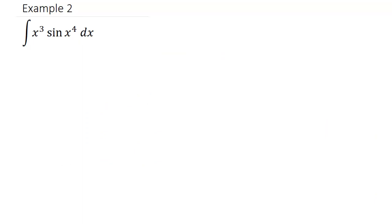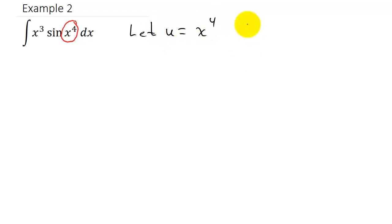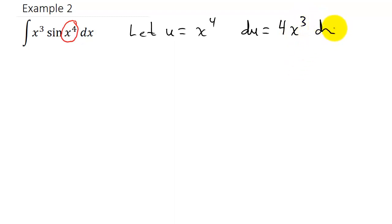Let's take a look at another one. We want to get it in one of those formula forms. Here I'm going to let u equal what I'm taking the sine of — x to the fourth. So u equals x to the fourth, and du is 4x cubed times dx.